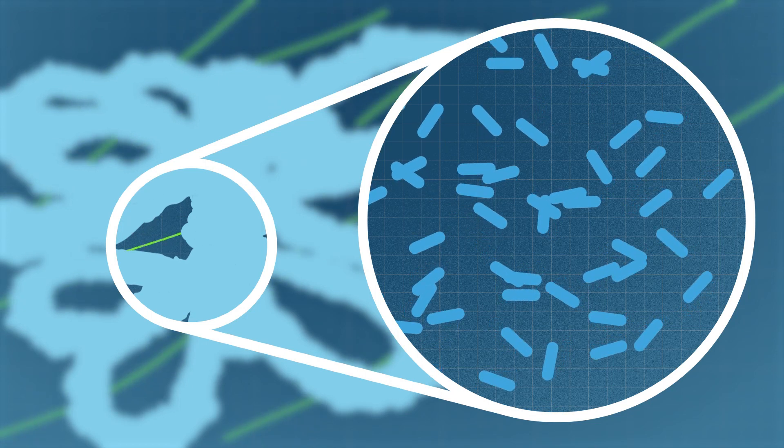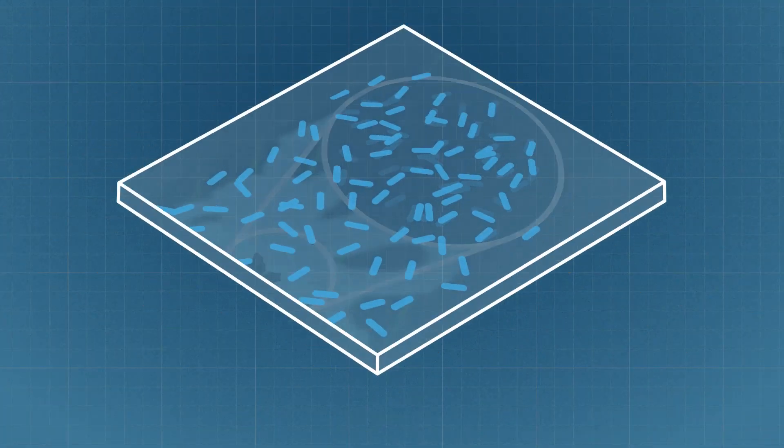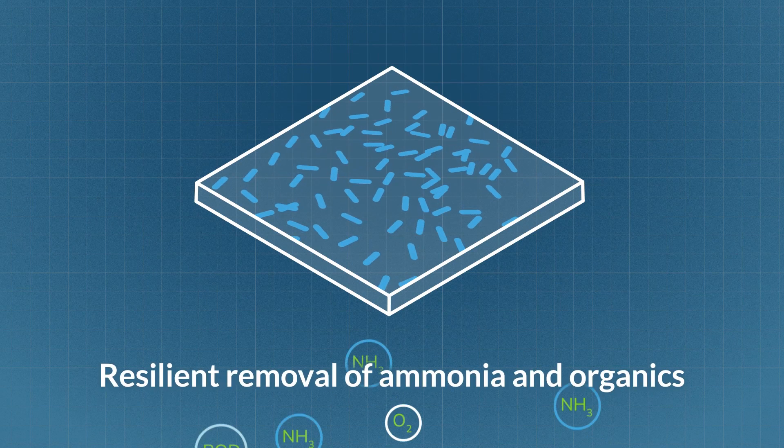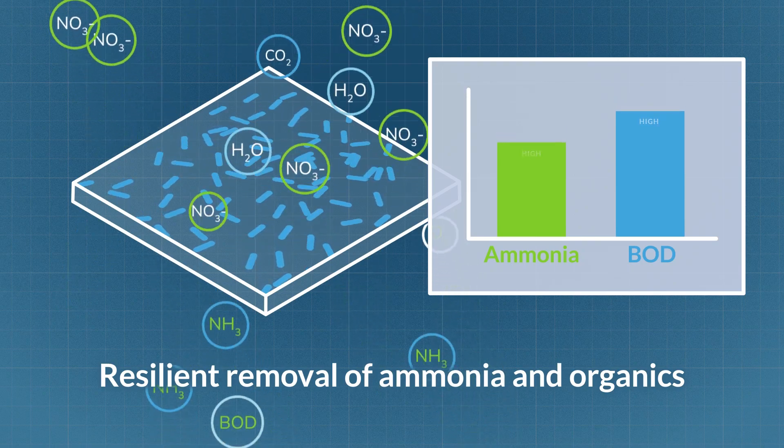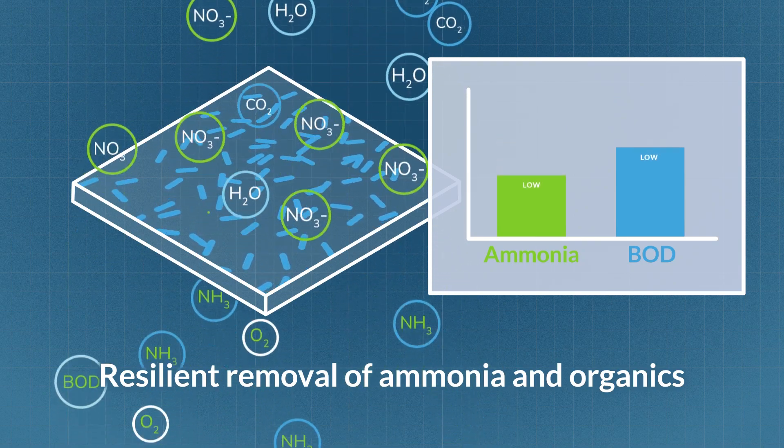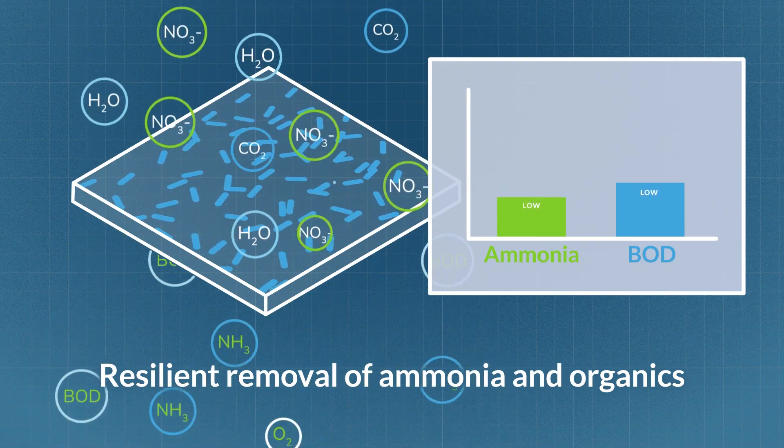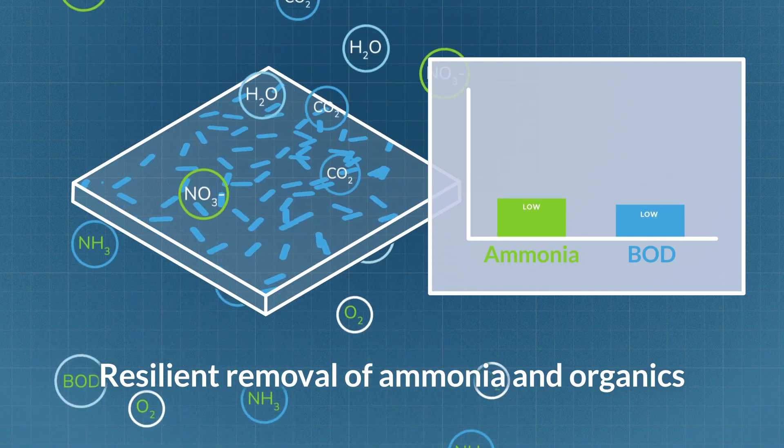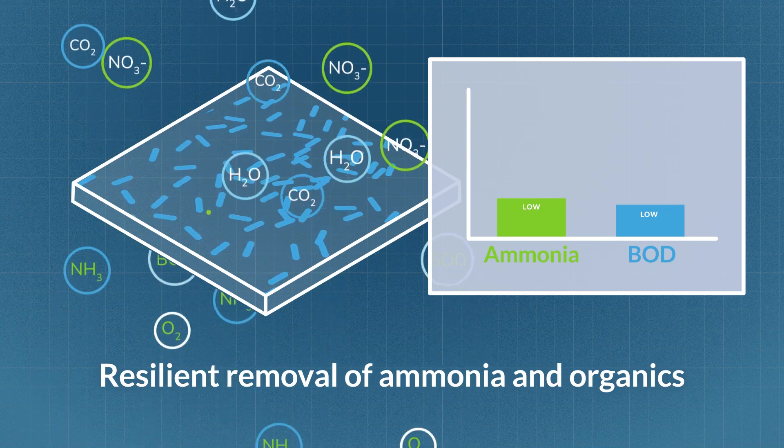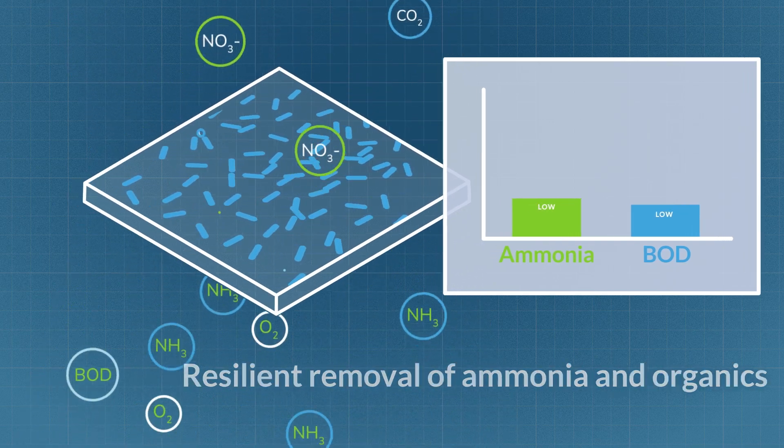As contaminants, such as ammonia and organics, move through the biocord media, they come into contact with the biofilm and the dense population of bacteria. These bacteria take up the contaminants in the wastewater to remove BOD and efficiently convert ammonia into nitrate.